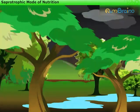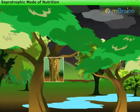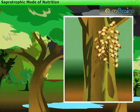The fluffy, umbrella-like patches that grow on rotting wood during the rainy season are called mushrooms.